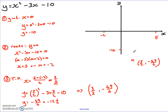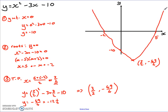I've got all the key information: the turning point, the y-intercept, and the roots. It's then just a case of joining it all up using the appropriate shape, and you end up with a curve that looks roughly like that. Name it: y equals x squared minus 3x minus 10. And there's your curve.